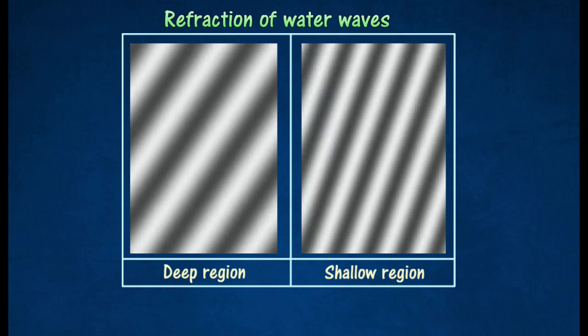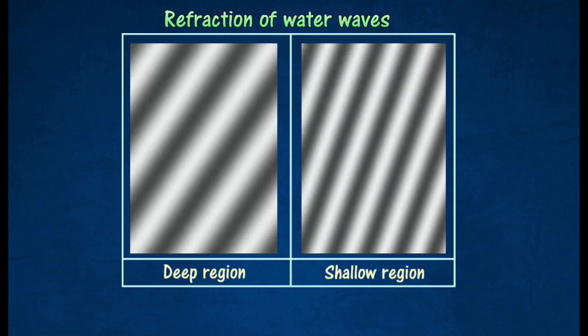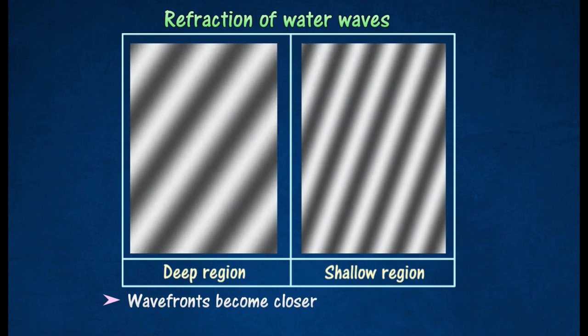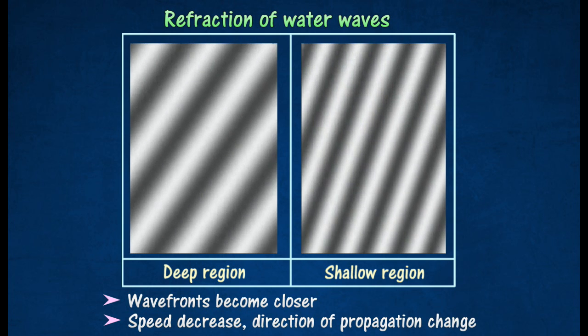The diagram shows the refraction of water waves in a ripple tank. As water travels across the shallow region, their wave fronts become closer. The speed of water waves decreases, and their direction of propagation changes in the shallow region.